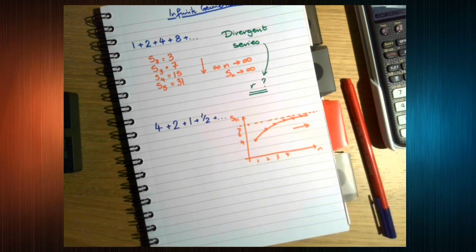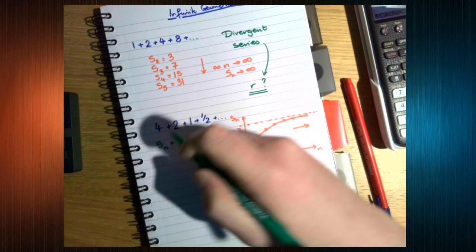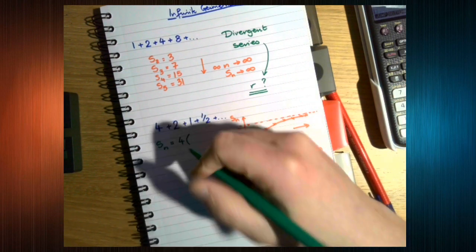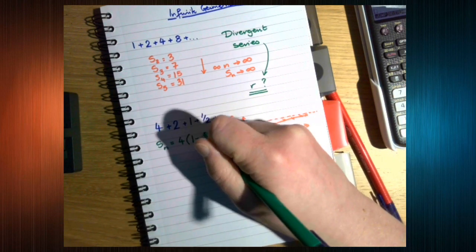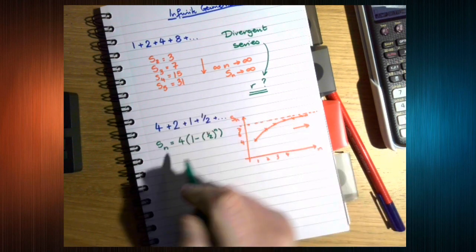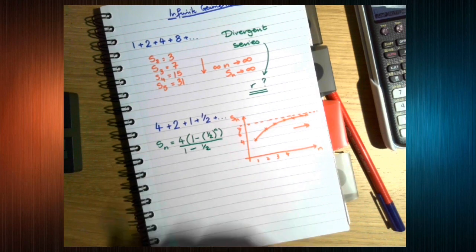Why is that? Well, let's have a look at the formula. So, we know the sum is going to be the first term times 1 minus the common ratio, which is 0.5 to the N over 1 minus the common ratio.